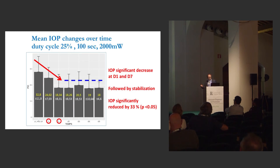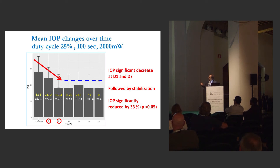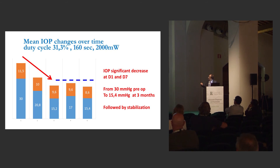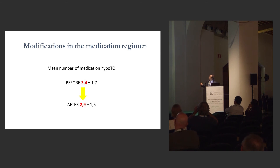We found a very significant IOP change at Day 1 and Day 7. For example, the mean IOP before treatment was 32.8 mmHg, dropping to 18 at one week and remaining stable at nine months. This was for the 25% duty cycle group. For the 31.3% duty cycle group, we saw a similar pattern but with better IOP results, and very good reductions in medication use.